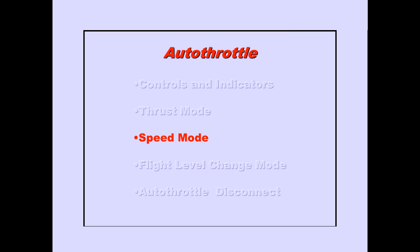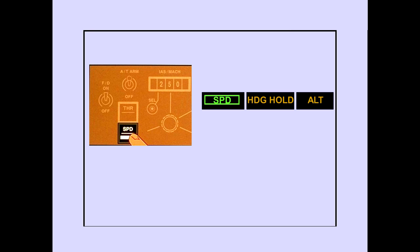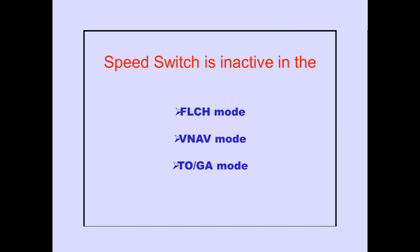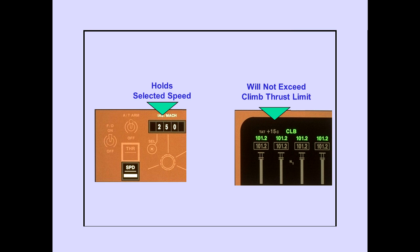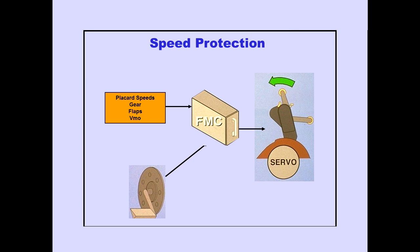Now let's discuss the speed mode. Pushing the speed switch in flight engages the autothrottle speed mode, and speed is displayed on the PFD. The speed switch is inactive if in the flight level change, VNAV, or TOGA mode. In the speed mode, the autothrottle holds the selected speed shown in the IAS mach window, but will not exceed the selected thrust limit. The FMC provides minimum and maximum speed protection. The autothrottle will reduce to idle in an attempt to prevent placard speeds from being exceeded. An airflow sensor furnishes angle of attack information to provide minimum airspeed protection.